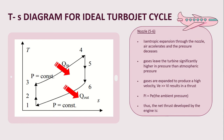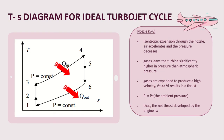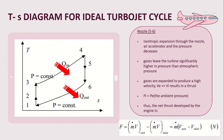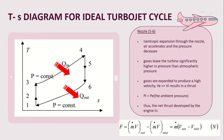Gases leave the turbine at significantly higher pressure than atmospheric pressure. Gases are expanded to produce a high velocity exit, much higher than the inlet velocity, resulting in thrust. The pressure at the inlet and exit of a turbojet engine are identical — P_inlet equals P_exit — known as the ambient pressure. The net thrust developed by the engine is: Force = mass flow rate × (V_exit − V_inlet), and the SI unit for force is Newtons.